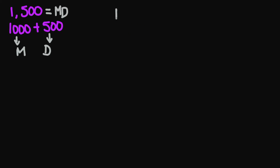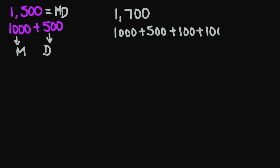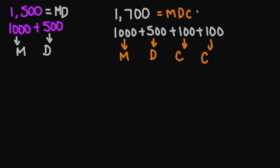Let's look at one thousand seven hundred. This is going to be broken down into one thousand plus five hundred plus one hundred plus one hundred. The Roman numeral for one thousand is M, for five hundred is D, one hundred is C, and then one hundred is C again. So your final answer is going to be MDCC.